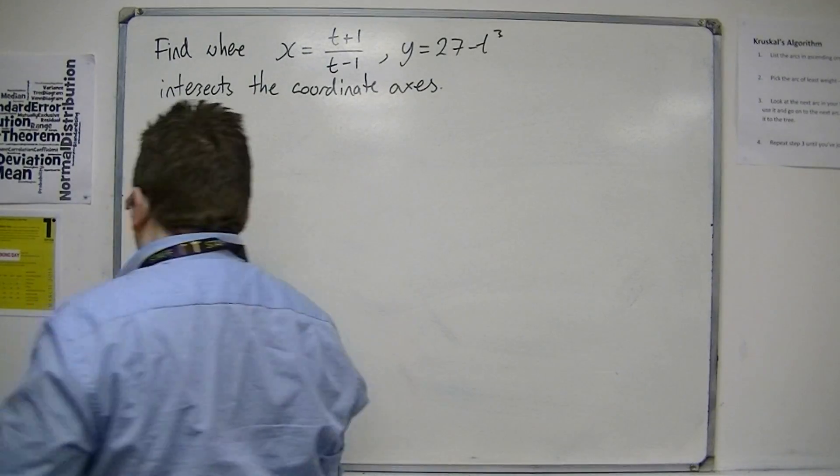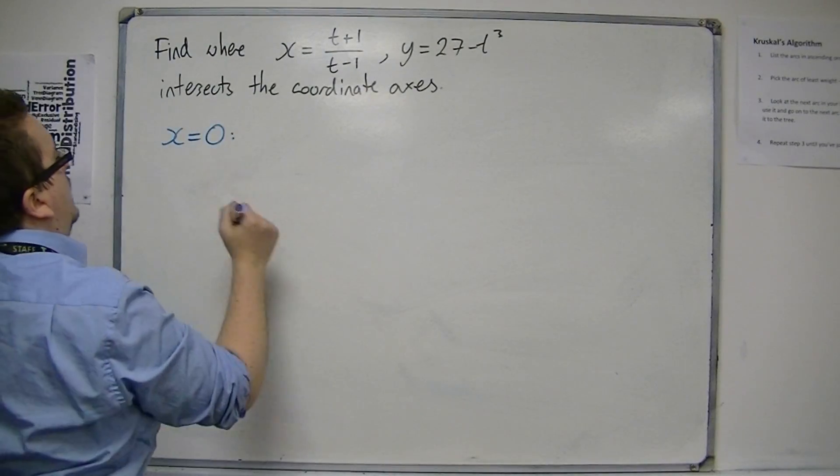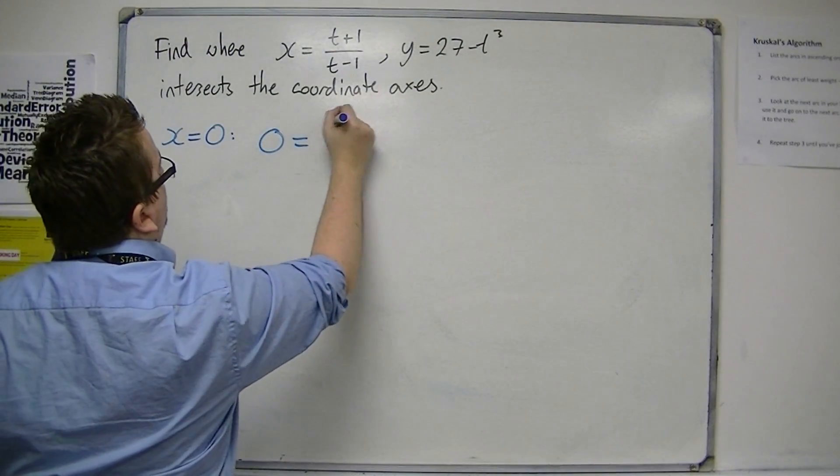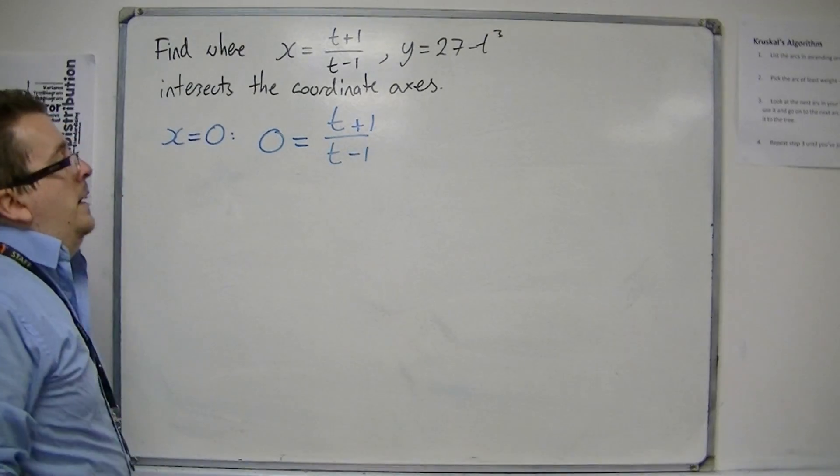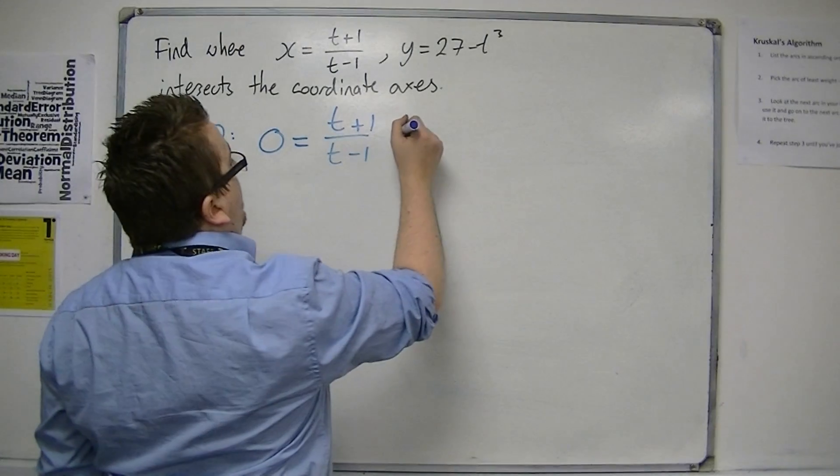First of all, if I want to find out where it crosses the y axis, that is when x is 0. So I put x is 0, and this is only going to be 0 when t is minus 1.